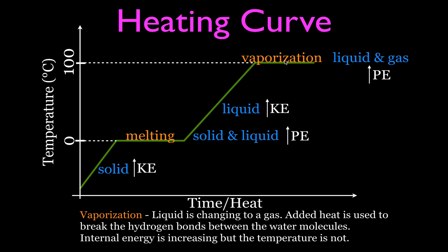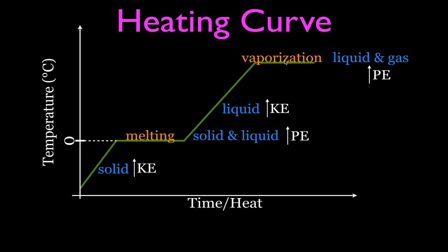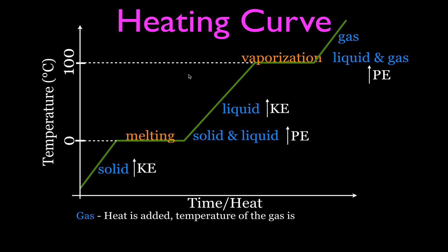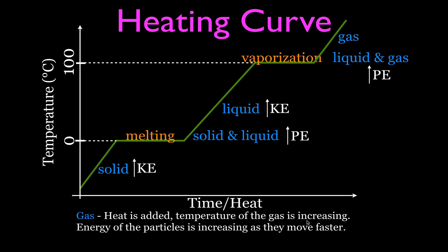Once all the liquid has turned into a gas, we continue to add heat and the temperature of the gas rises again. Since temperature is directly related to kinetic energy, it is the kinetic energy that is increasing as we add more heat to the gas. To summarize: horizontal lines on the graph indicate a phase change where temperature is constant and potential energy increases; sloped lines indicate a single phase — solid, liquid, or gas — where kinetic energy increases as heat is added.